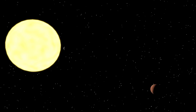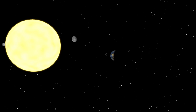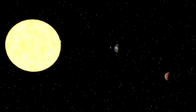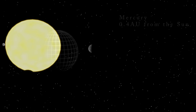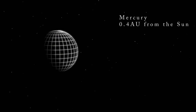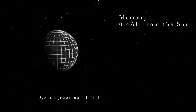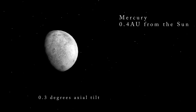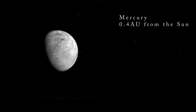The four terrestrial planets are Mercury, Venus, Earth, and Mars, and are the four planets closest to the Sun. They're generally made up of solids such as rock and metals, unlike the gas giants. Mercury is the closest planet to the Sun, the smallest planet in the solar system, and has the greatest range in surface temperature because of its proximity to the Sun and lack of an atmosphere.